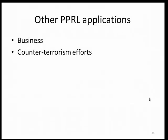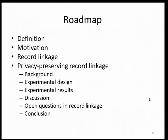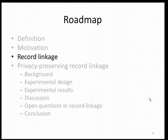This is a road map for the rest of the talk. We've looked at what record linkage is, what privacy-preserving record linkage is, and some applications. Next I'll generally describe record linkage and the steps involved, then look at how we can shift all of that into the privacy-preserving domain. I'll describe work that's been done in the field and experiments we set up, the results, and some implications. Then we'll look at some open questions in record linkage and wrap things up.